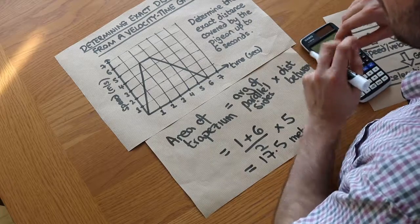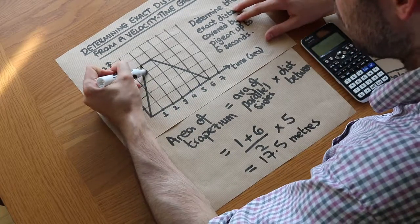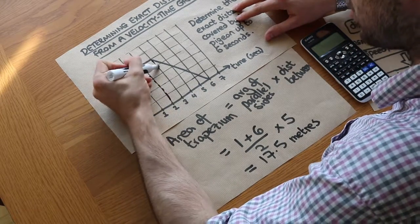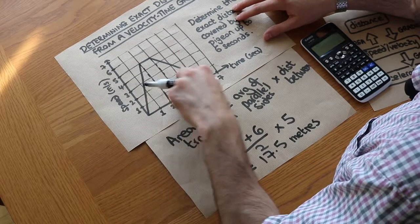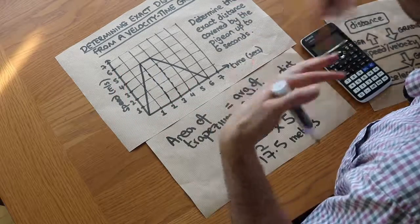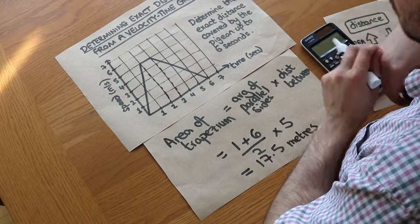But as I said, what we could have done is split this into simpler shapes like a rectangle and two triangles and found the area of those three shapes and added them together, but it's slightly more direct to find the area of the trapezium instead.